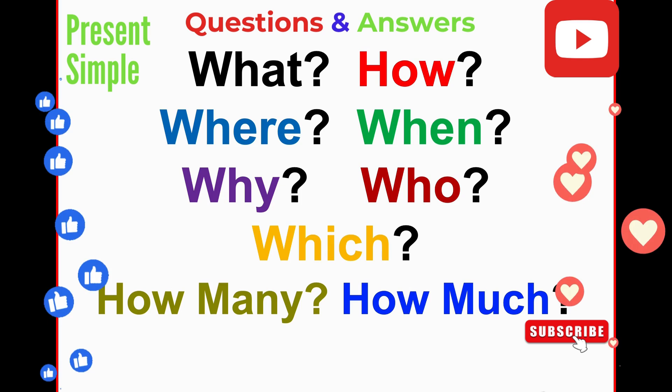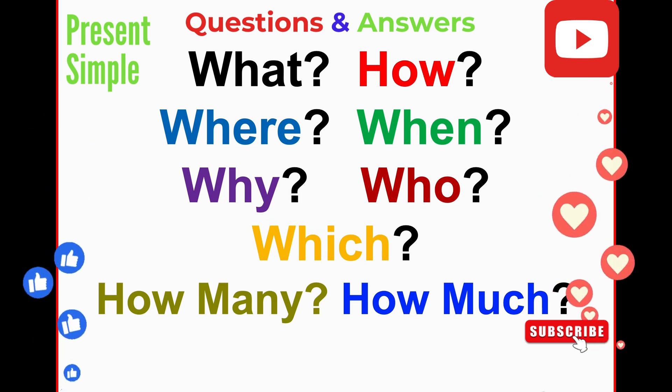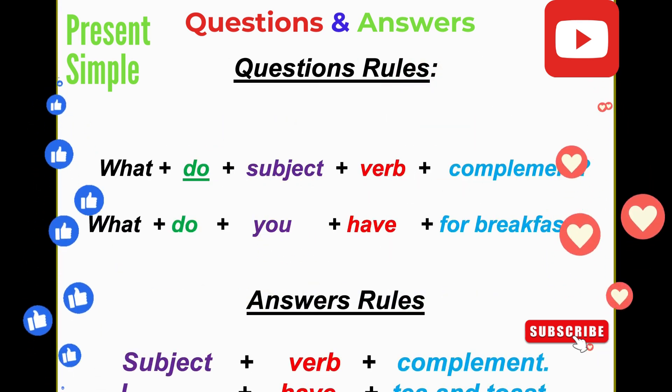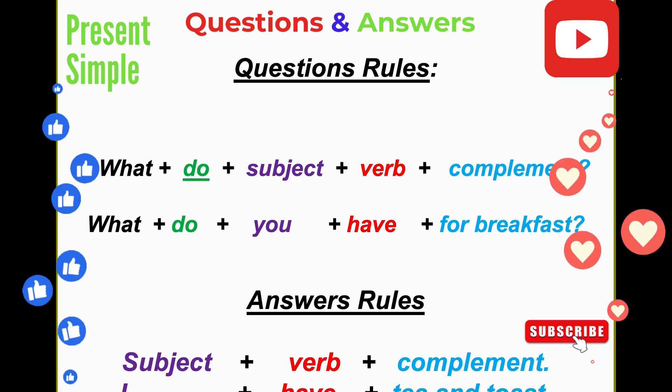So we are going to see these with verb to have. Before we have real sentences, we are going to see the question rules. This is the rule how to make a question in English.